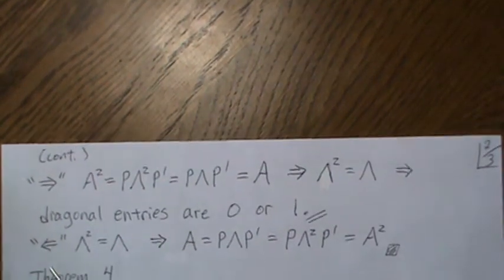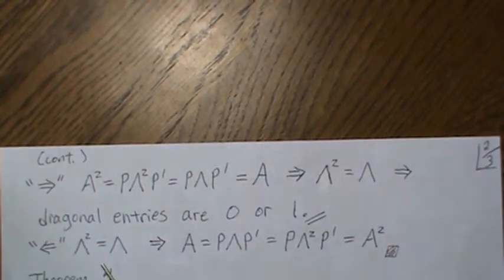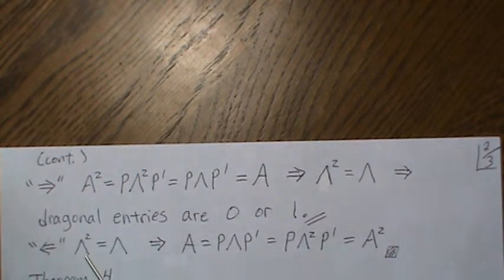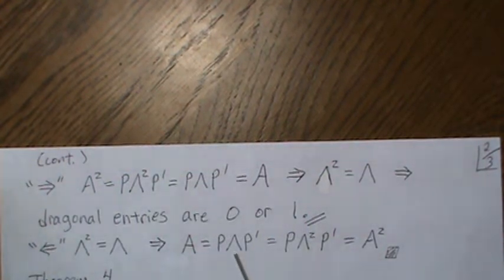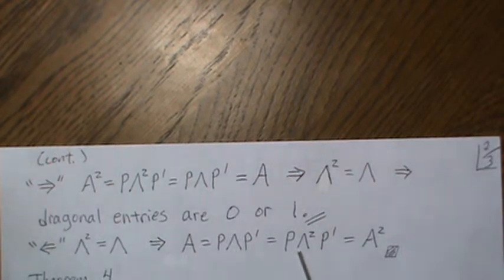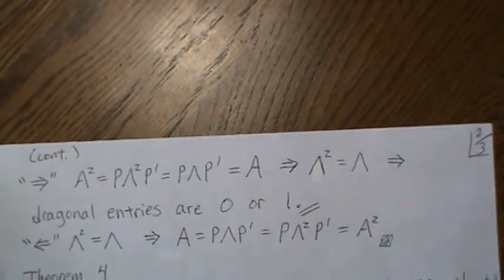Now the other direction: assume all eigenvalues are 0 or 1. That implies lambda squared equals lambda. So A equals P lambda P prime by the spectral decomposition, but lambda equals lambda squared, so A equals P lambda squared P prime, which is A squared. So A is idempotent, and the theorem is proven.